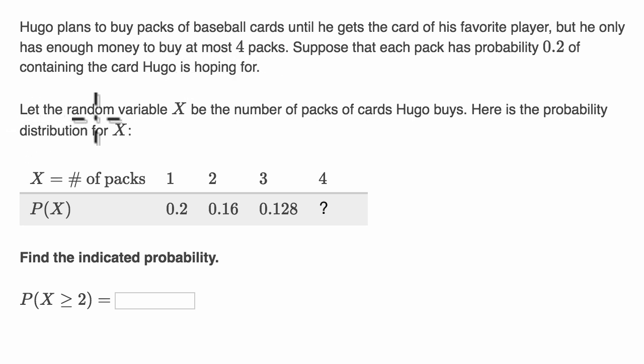Let the random variable X be the number of packs of cards Hugo buys. Here is the probability distribution for X. There is a 0.2 probability that he buys one pack, and that makes sense because that first pack has a 0.2 probability of containing his favorite player's card, and if it does, he'll just stop. He won't buy any more packs.